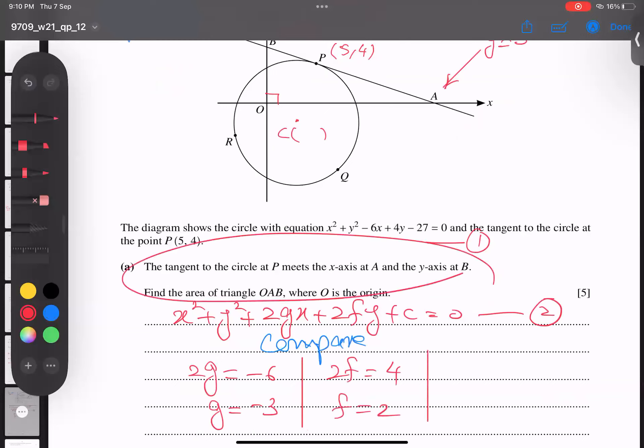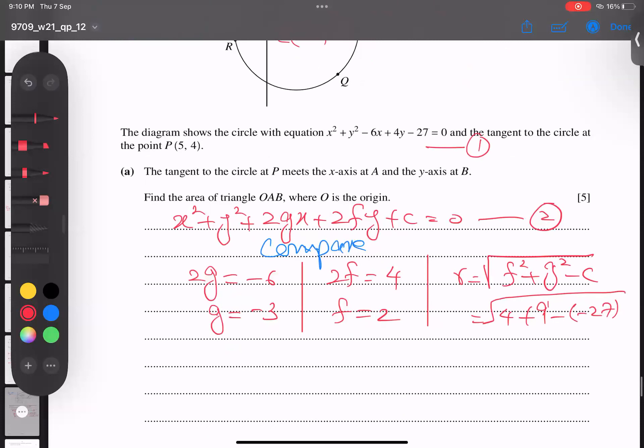C equals negative 27. Although he's not asking for the radius, but I'm finding it - maybe in future we'll need it. Radius formula, all of you know, is root of F² + G² - C. F² becomes 4, G² becomes 9, and minus C is minus negative 27. So I get 9 + 4 = 13, and 27, it becomes 40. Root of 40, 4 times 10, so 2 root 10 is the radius.